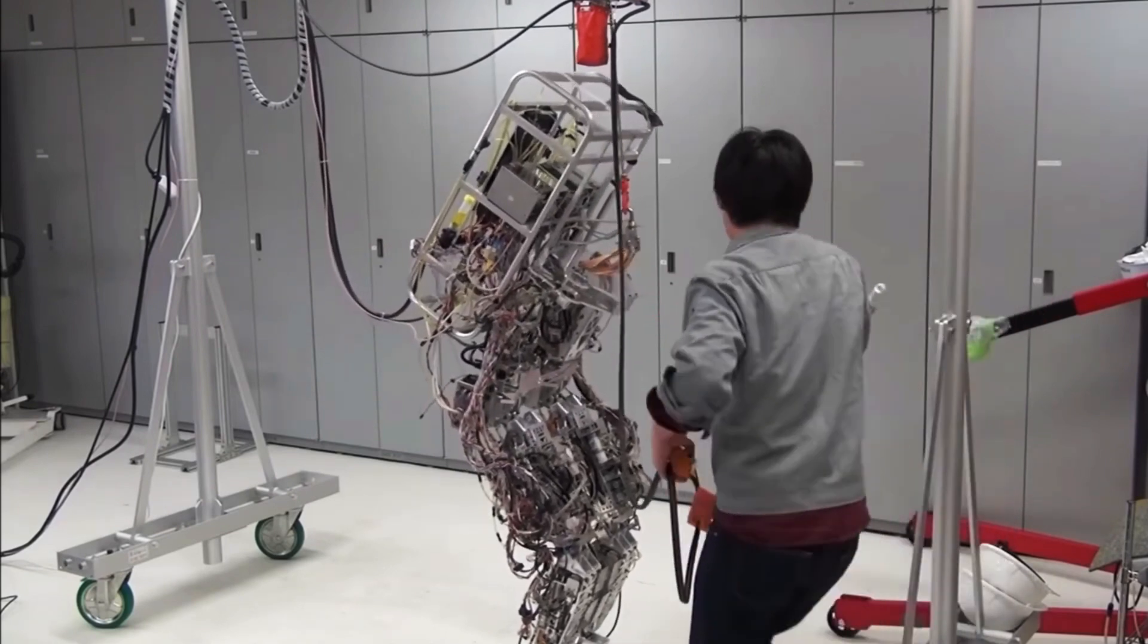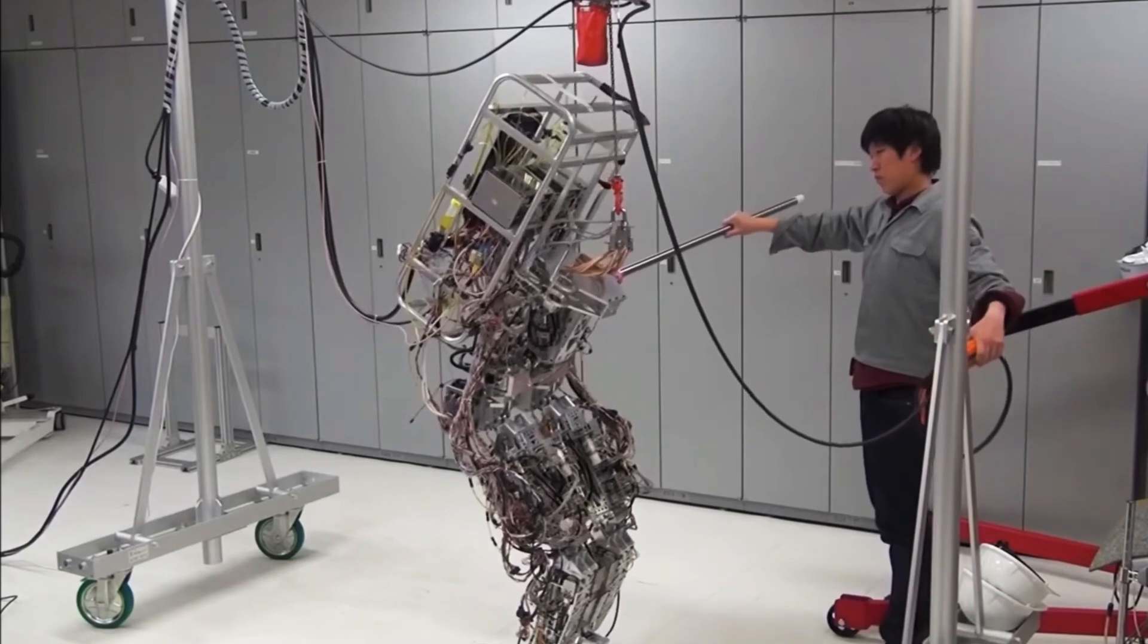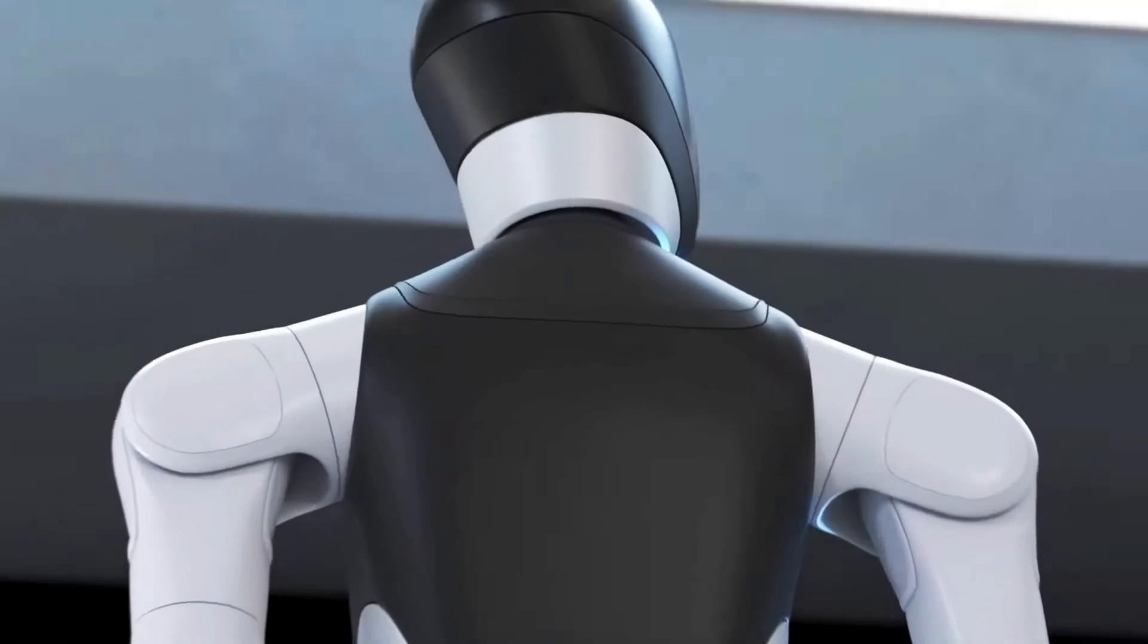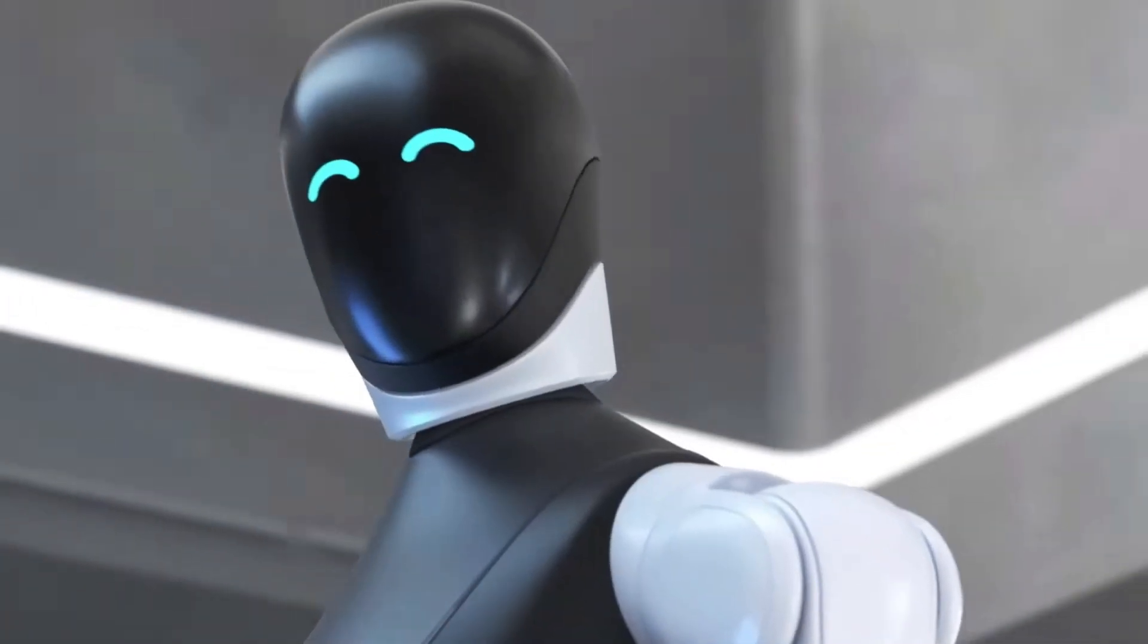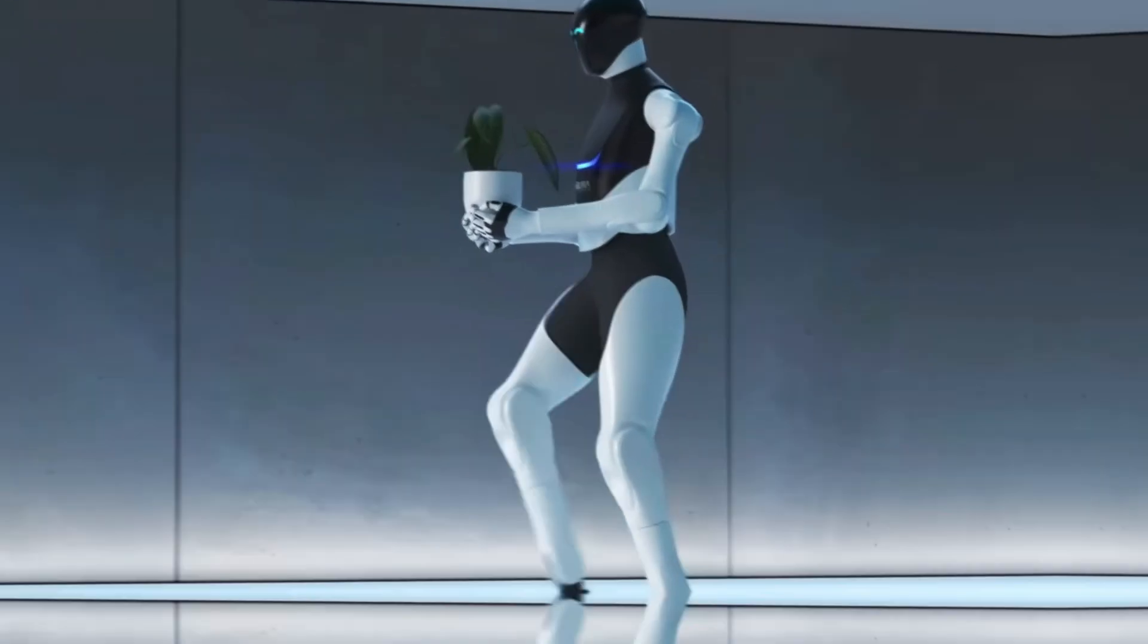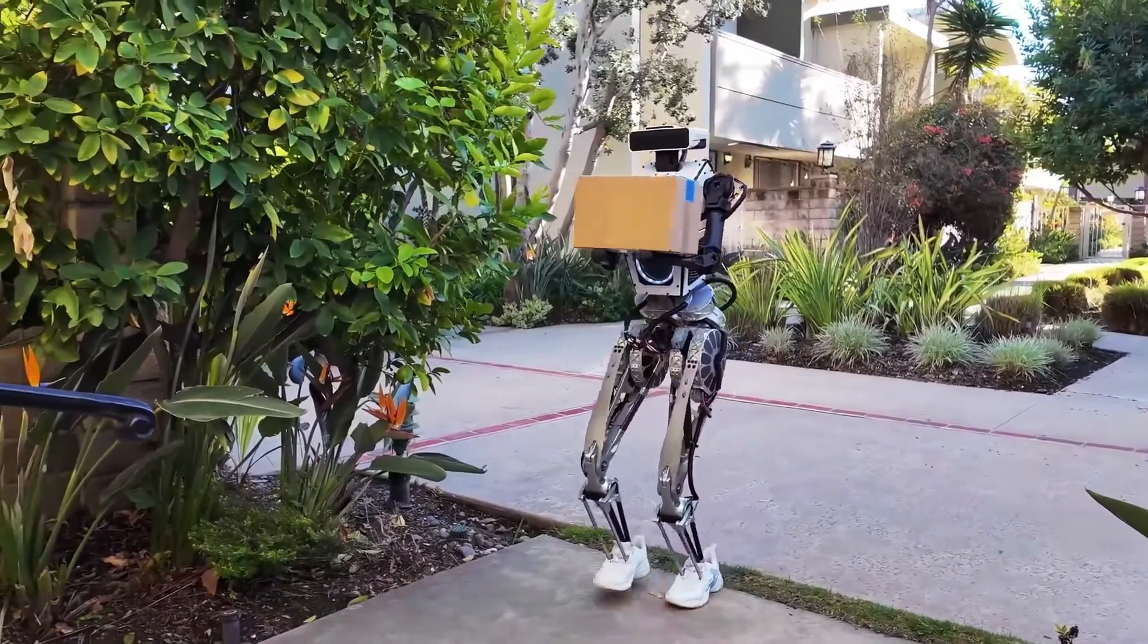As with any powerful technology, it's important to consider the potential risks and ensure that it's used ethically and responsibly. This means engaging in open and honest conversations about the implications of creating robots that blur the lines between humans and machines. It also means developing guidelines and regulations to govern the use of this technology.